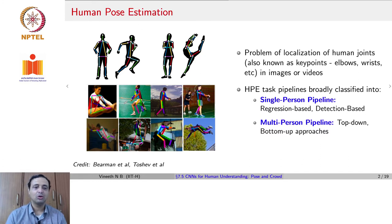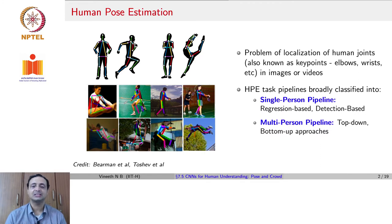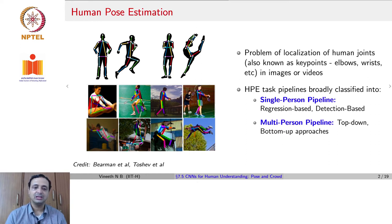Illustrations show how a pose estimation model works — we are looking for the positions of each joint. There are many challenges: this task is different from image-level classification, detection, segmentation, or face verification. Furthermore, when occlusions come into play, especially self-occlusions where a part of the human body occludes another part, the task becomes very challenging.